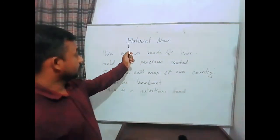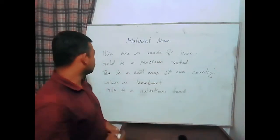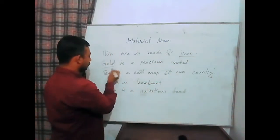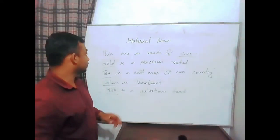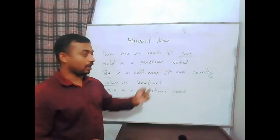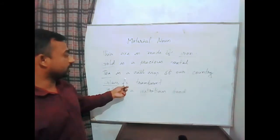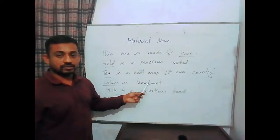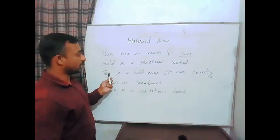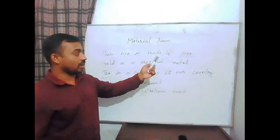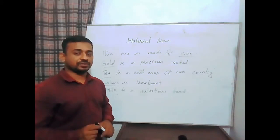Now, material noun. Materials are those types of words that name a raw material — for example, iron, gold, tea, glass, milk. These words are called material nouns. 'This axe is made of iron' — iron is a material. 'Gold is a precious metal' — gold is also a material. 'Tea is our cash crop.' 'Glass is transparent.' 'Milk is a nutritious food.' So these words — iron, gold, tea, glass, and milk — are shown as materials. These are material nouns.